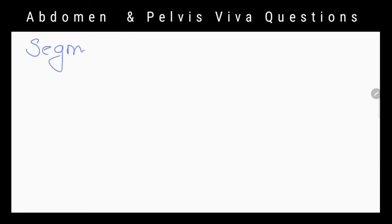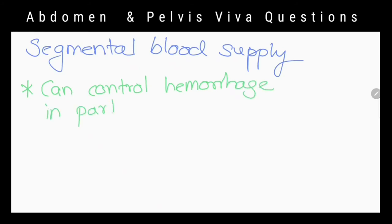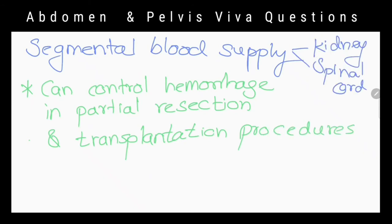The renal vein emerges from the hilum in front of the renal artery and drains into the inferior vena cava. What is the clinical importance of segmental blood supply? It is useful to control hemorrhage in partial resection or transplantation procedures. Another organ with segmental blood supply is the spinal cord.